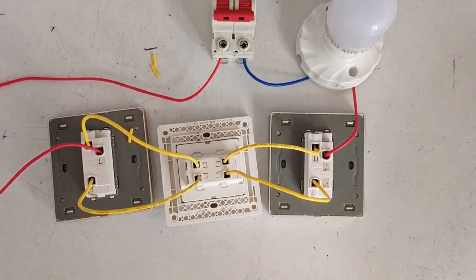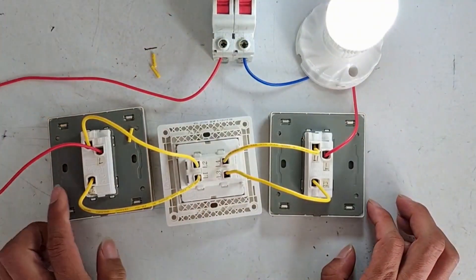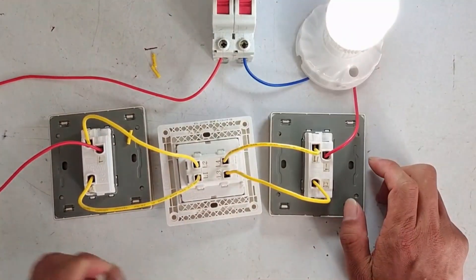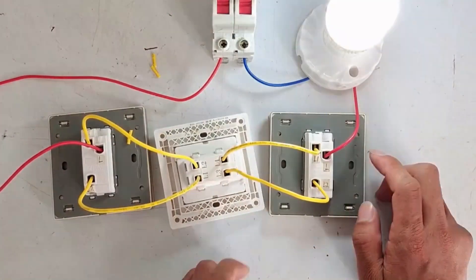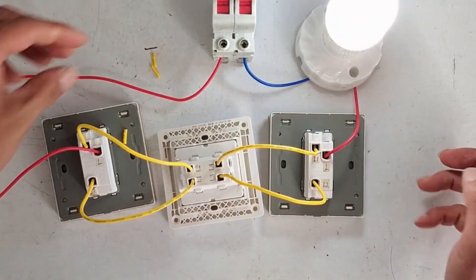There are three switches to control one light. Let's try it. Turn on the light at the door. Turn off the light at the door. Turn on the light at the bedside. Turn off the light at the bedside. Lights on here, lights off here. Turn it on and off at will.